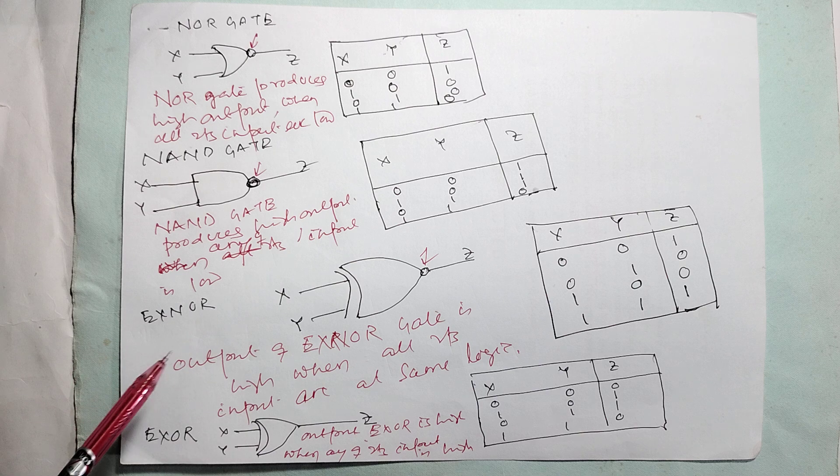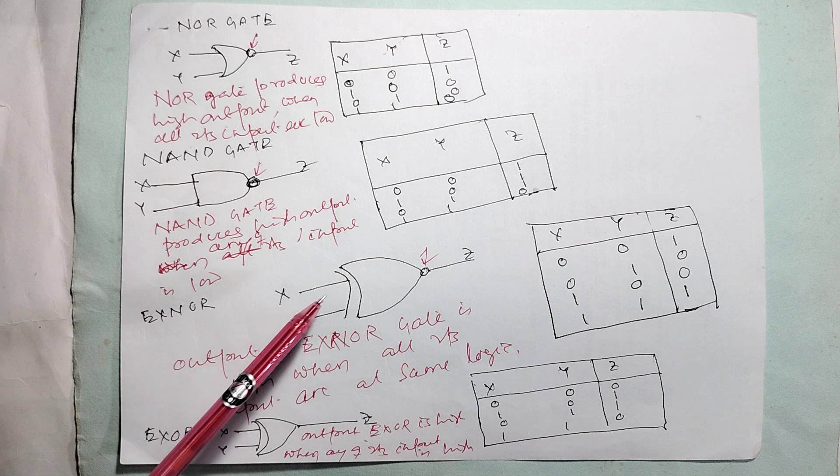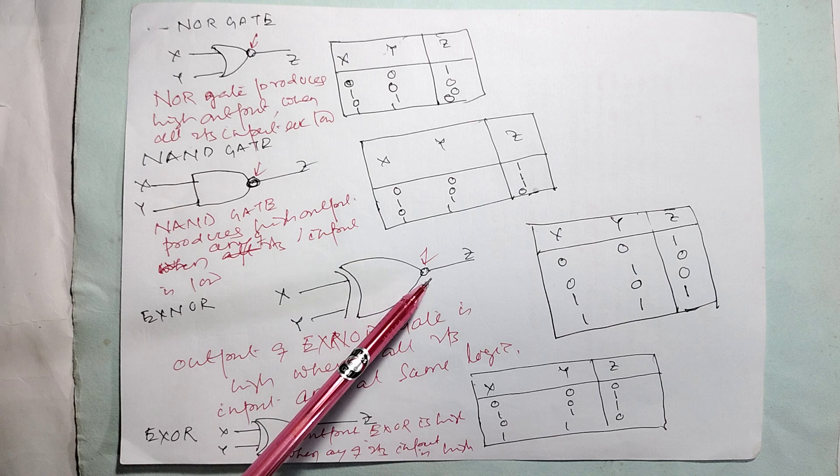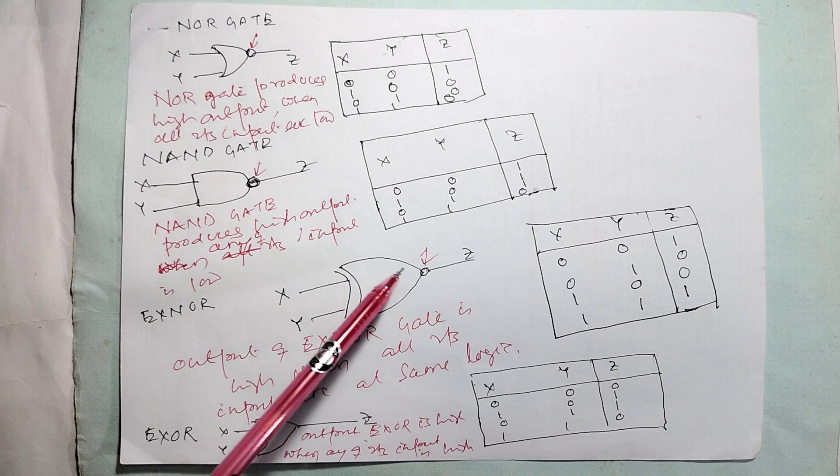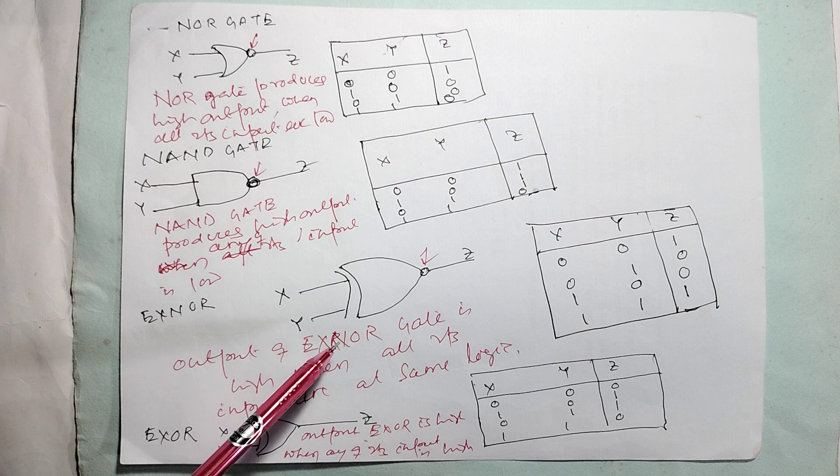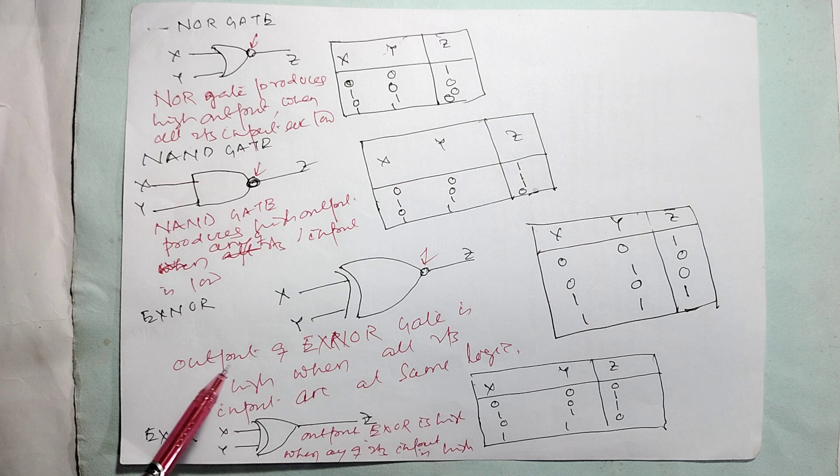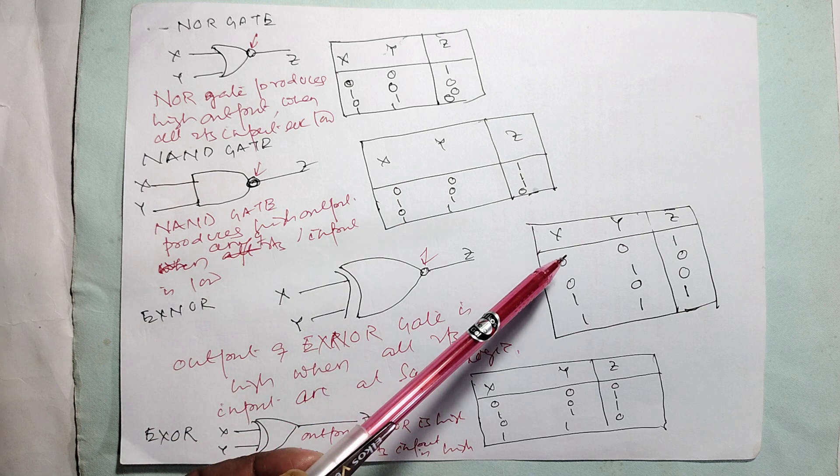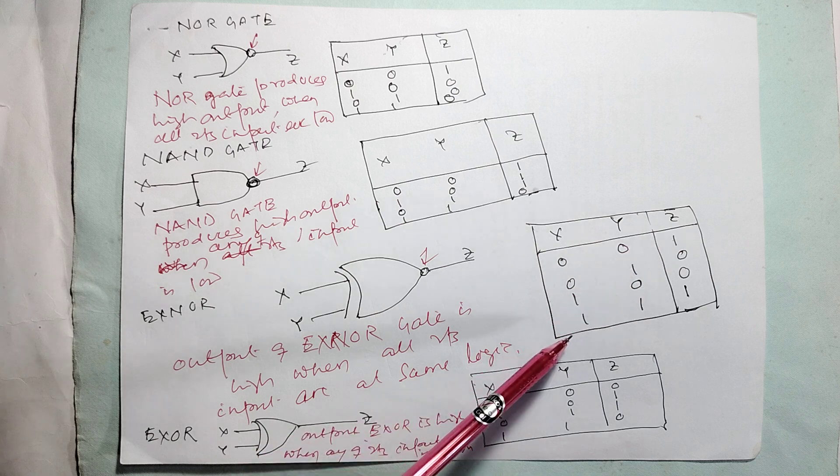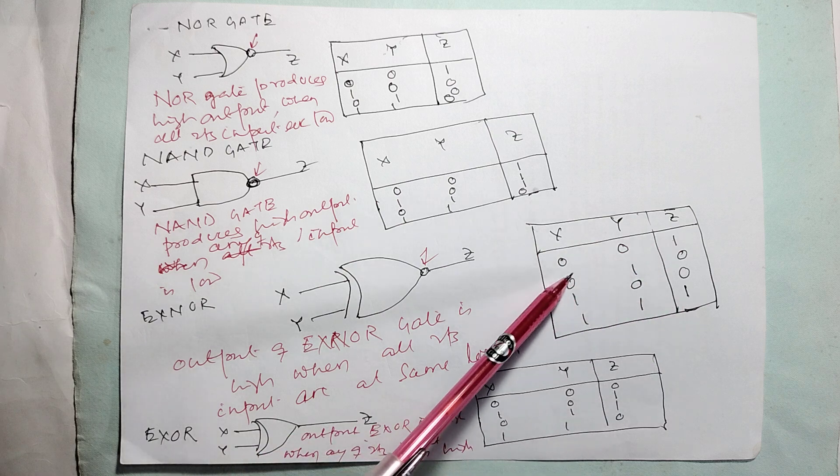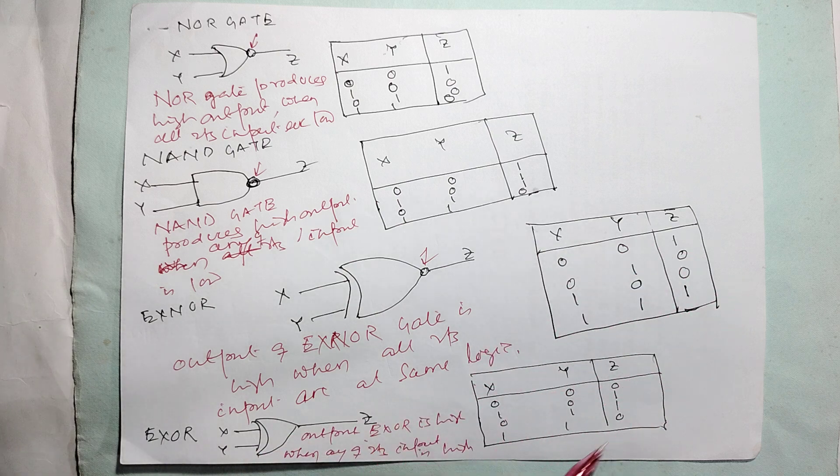Then comes XNOR. This is XNOR. This is the symbol. This NOT symbol means this is the XNOR symbol. The output of XNOR gate is high when all the inputs are the same. If zero-zero is there, it is one. One-one is there, it is one. Zero-one is zero. One-zero is zero.